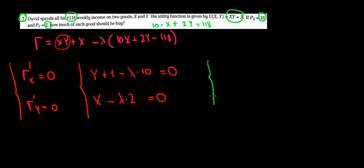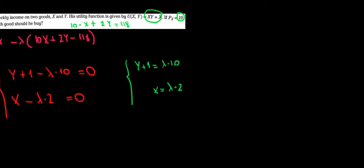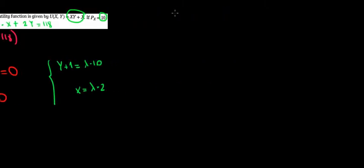Let's see where we're going with this. Let's keep all the lambdas on the other side. So we have y plus 1 equals to lambda times 10. And here we have x equals to lambda times 2. Now, we want to leave only lambda. So let's divide something. Let's divide y plus 1 by 10. So that's going to be equal to lambda. And here x divided by 2 is going to be equal to lambda. Now lambda equals to lambda. So we can find the relationship between x and y.